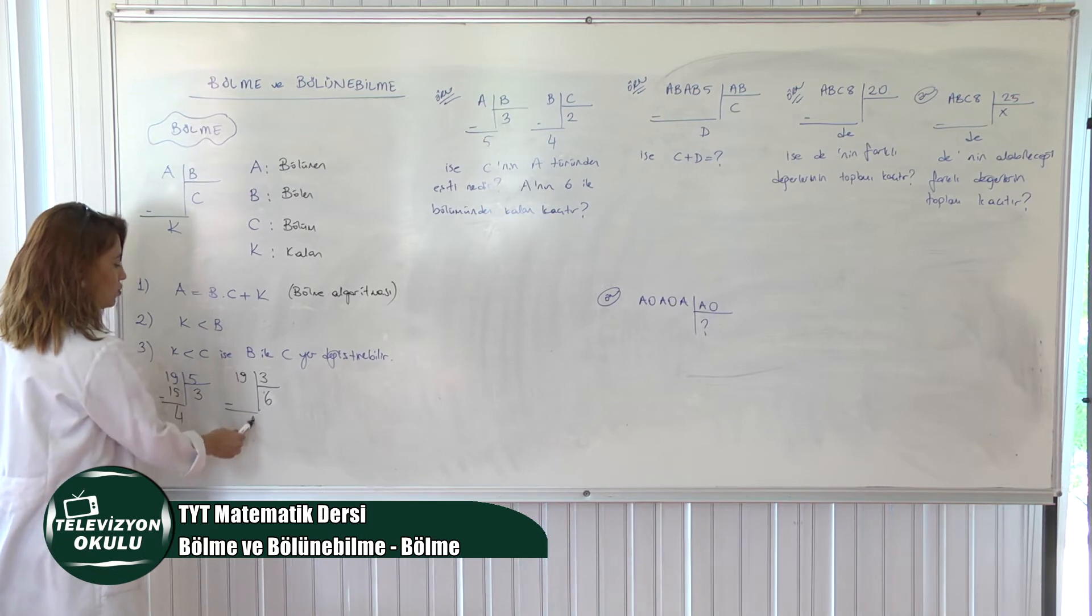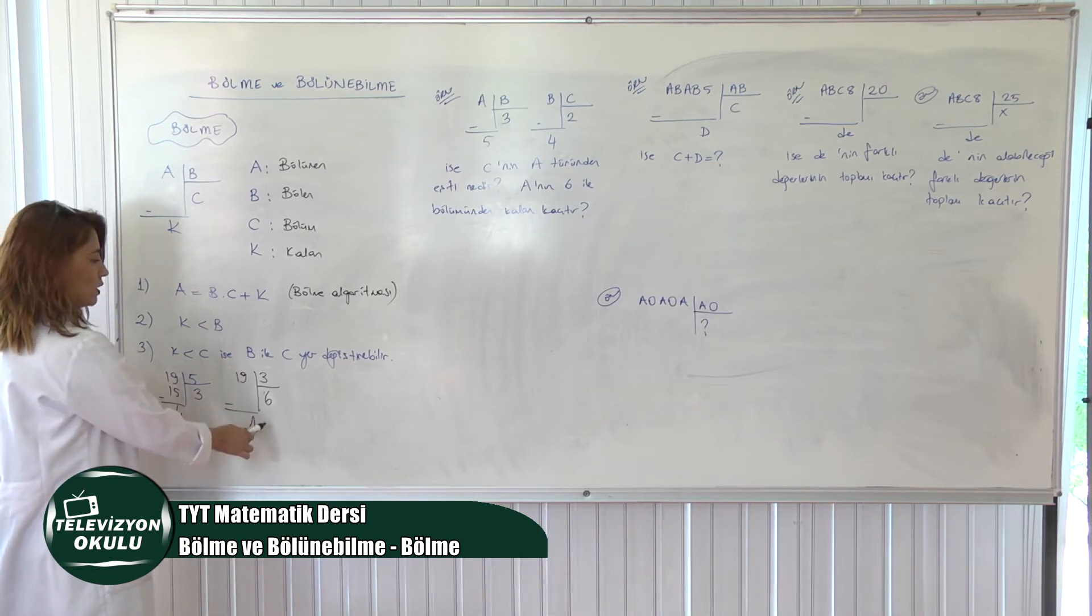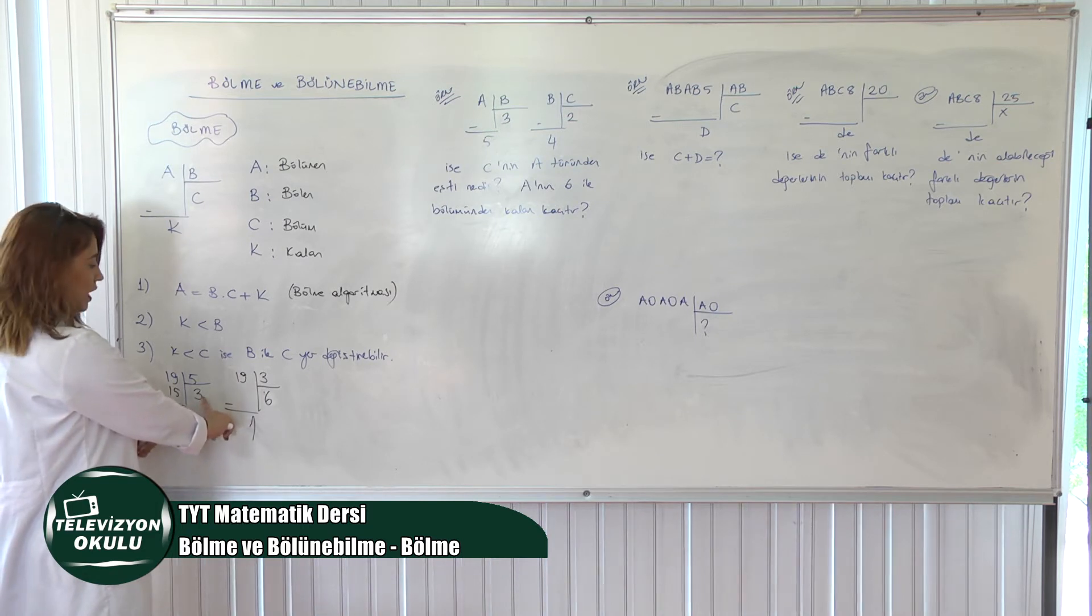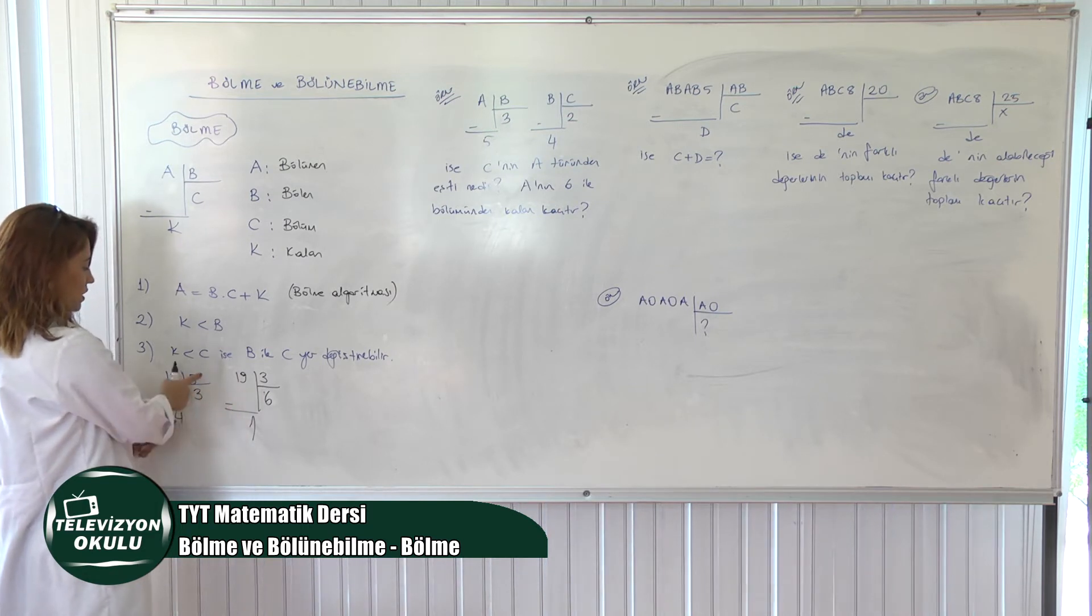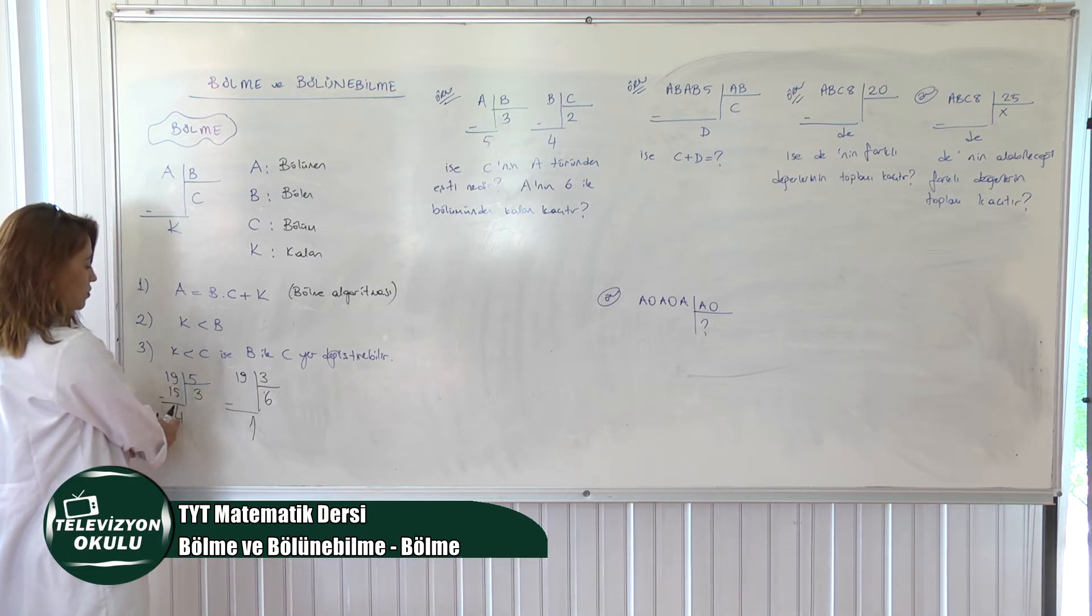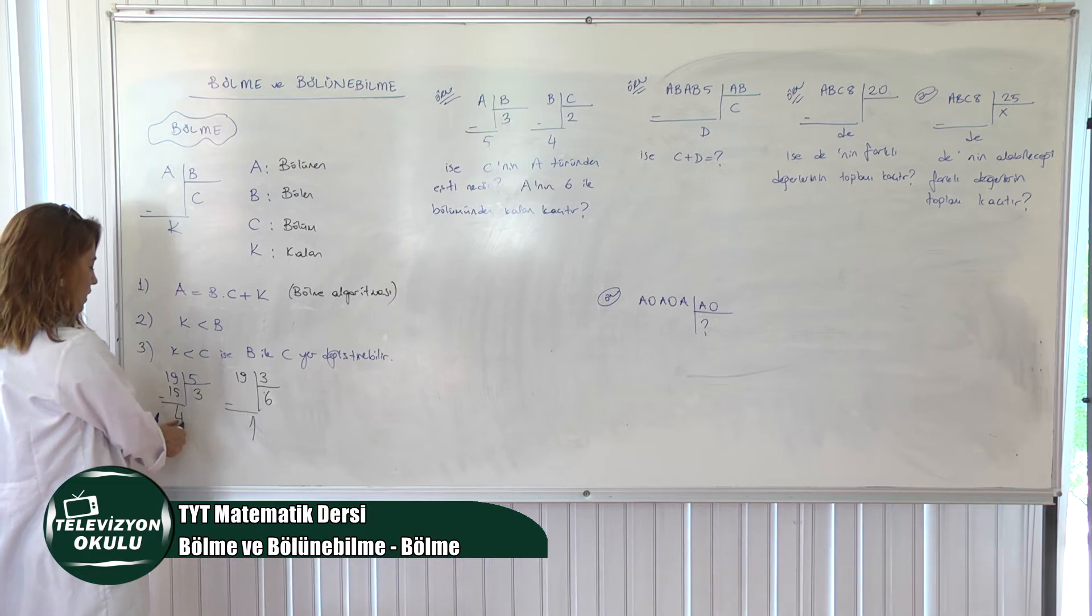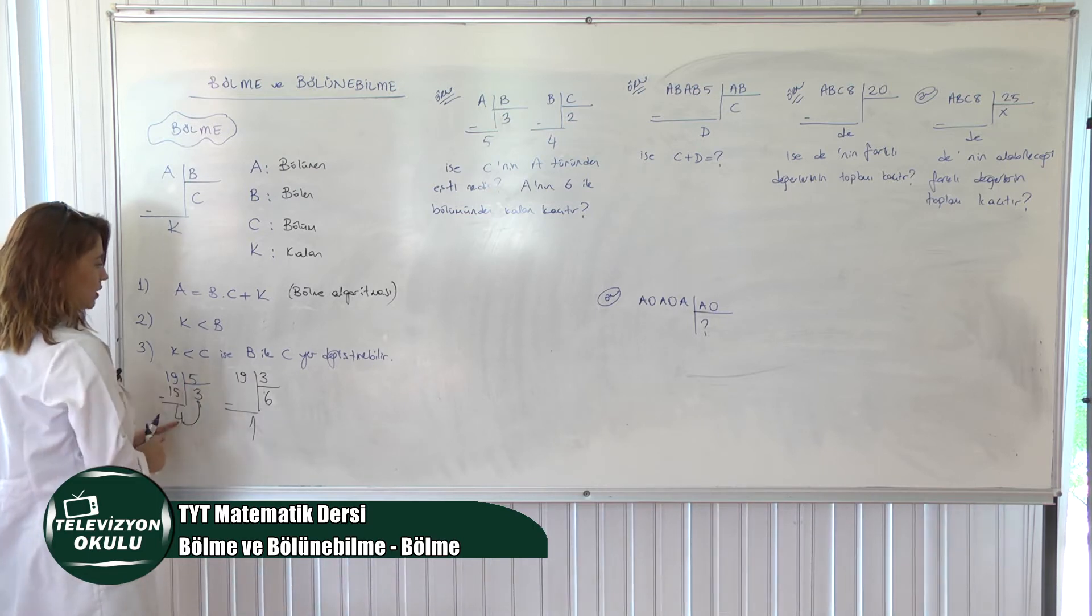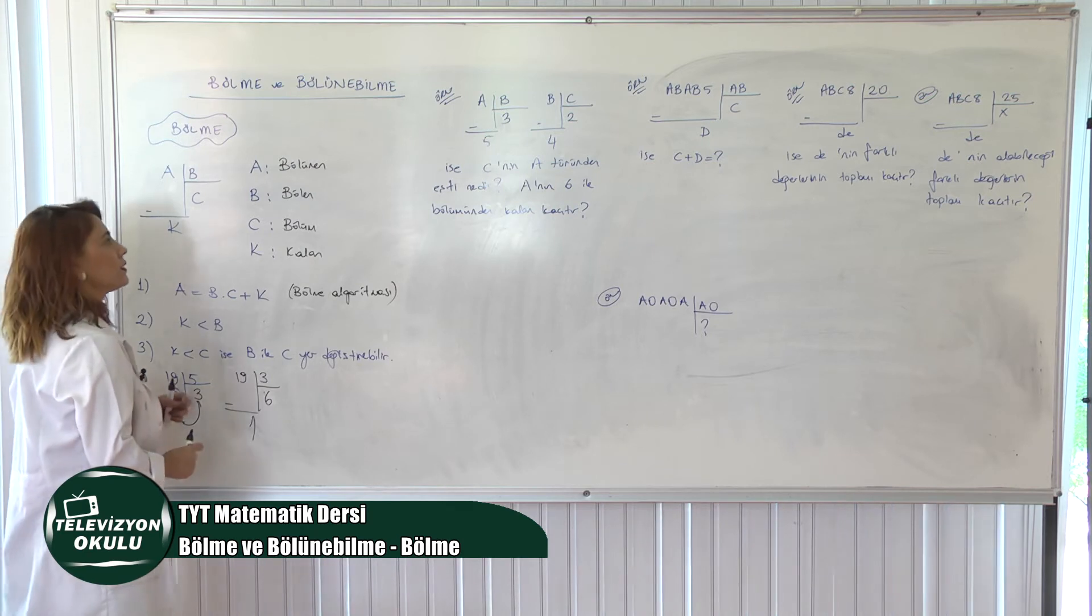Bakın o zaman yer değiştirmemiz yanlış olur değil mi? Ve kalanda 4 olmaz ne olur? 1 olur. Aynı şeyler olmadı. Çünkü 4 değeri 3'ten nedir? Daha büyüktür. Yer değiştirdiğinizde 3 yukarı geldiği için kalan bölenden daha büyük olmuş oluyor. Bu yüzden yer değiştiremiyorsunuz. Yani buradaki kalan bölümden ancak daha küçükse bölenle bölüm yer değiştirebilir diyoruz.